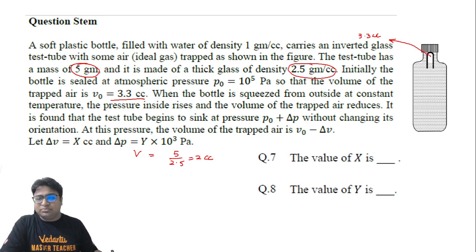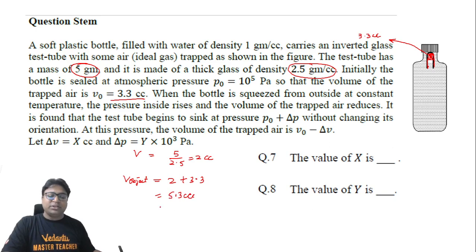And this volume of this air, so I can consider this entire glass along with this air as an object. So the total volume of my object would be 2 plus 3.3 cc, which is 5.3 cc.